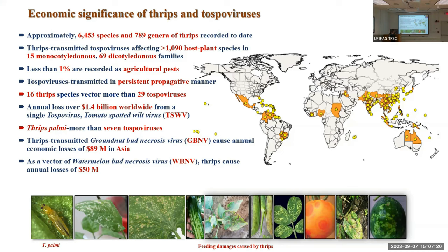Annual economic losses of around 1.4 billion dollars are caused by a single tospovirus — Tomato Spotted Wilt Virus. Thrips parvispinus alone is a vector of more than seven tospoviruses. It was initially identified in Southeast Asia, from Java, and has now spread all over the world except Europe, where it was eradicated from greenhouses and fields. This species causes annual economic losses of 89 million dollars in Asia, and another virus it transmits — Watermelon Bud Necrosis Virus — causes 50 million dollars in economic losses.